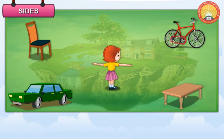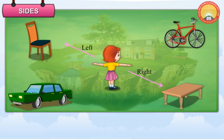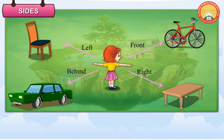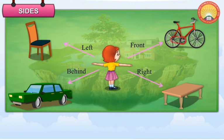Look at the picture of the girl. The table is on her right. The chair is on her left. The bicycle is in front of her. The car is behind her. The sides help us to locate things and places in our surroundings.